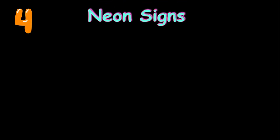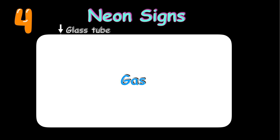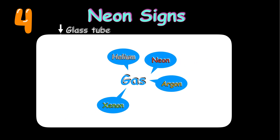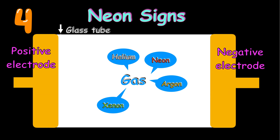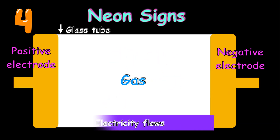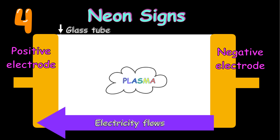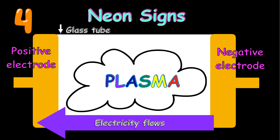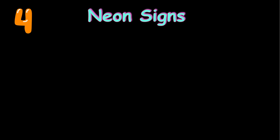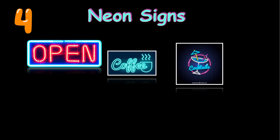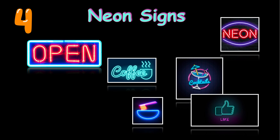Number four: neon signs. Neon signs are glass tubes filled with gases such as helium, neon, argon, and xenon. At each end, a metal electrode is attached. When electricity flows through the tube, it ionizes the gas in the tube. This creates plasma inside the tube, causing it to emit colored lights. The plasma glows a special color depending on the gas inside.